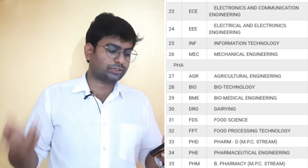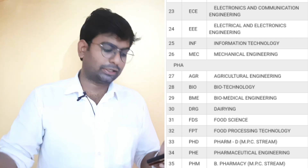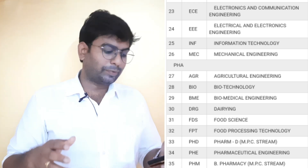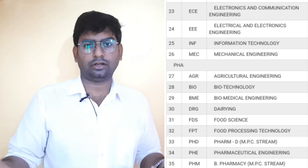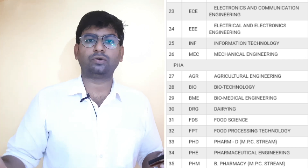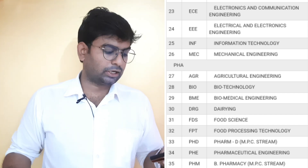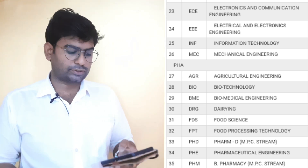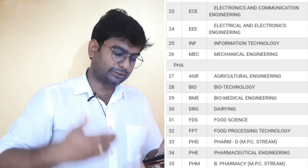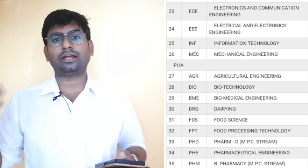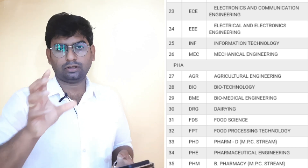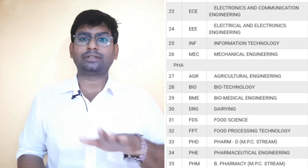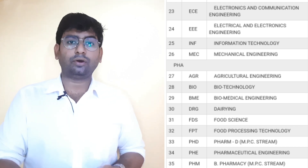Agriculture Engineering, Biotechnology Engineering, Biomedical Engineering, Dairy and Food Service, and Food Processing Technology — Farm D in the MPC system. So there are 35 courses total. These are the most important and precious courses, so many can remember and learn them.